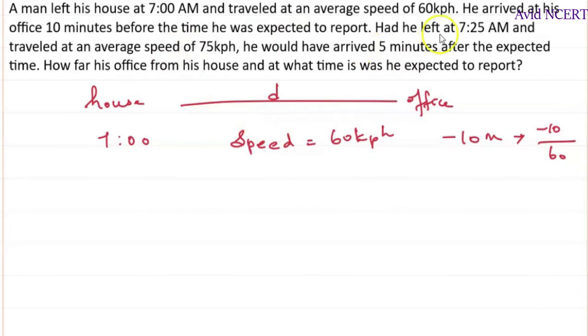And in the next scenario, he has left from his house by 7:25 a.m. and travelled at a speed of 75 km per hour. So in which he has arrived 5 minutes after the expected time which is plus 5. Since this is also in minutes, we can convert this into hours by dividing by 60.